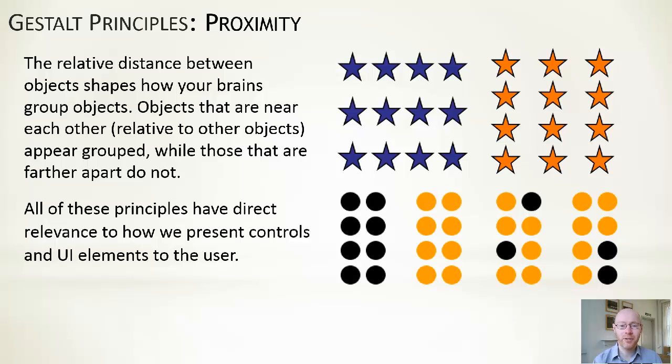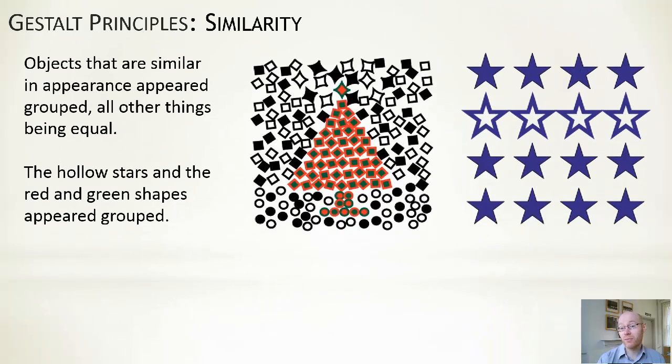Next one up is the notion of similarity. So objects that are similar in appearance appear grouped, all other things being equal. And you can see a few examples here of the Christmas tree where we have different rows of stars. But the hollow stars are perceived to be grouped together. So again, we interpret that as a group as opposed to, for example, four different columns with a different pattern of solid and hollow stars within it.